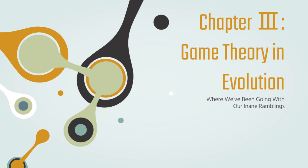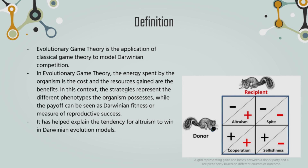Chapter 3: Game Theory and Evolution, or Where We've Been Going With Our Inane Ramblings. By definition, evolutionary game theory is the application of classical game theory to model Darwinian competition. In evolutionary game theory, the energy spent by the organism is the cost and the resources gained are the benefits. The strategies represent the different phenotypes the organism possesses, while the payoff can be seen as Darwinian fitness, or measure of reproductive success. It has helped explain the tendency for altruism to win in Darwinian evolutionary models.